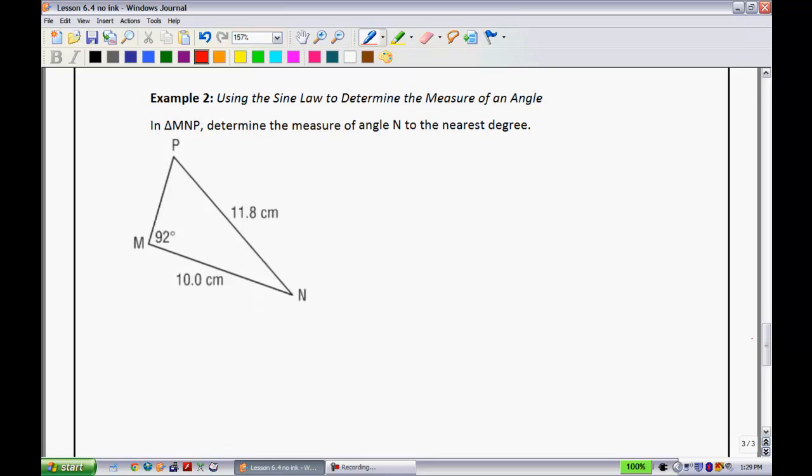Example two. Using the sine law to determine the measure of an angle. So, in triangle MNP, determine the measure of angle N to the nearest degree. Well, let's take a look here. We're trying to figure out angle N right here. Notice how we don't have the information of anything across from it. Well, that could be kind of problematic. Let's see. What else do we have here? I do have a full ratio. So, that's good. How am I going to deal with this? Because I do need a full ratio. But I need a side length that's across from the angle that I'm trying to figure out. Well, let's make a little note here. I think we have a plan.